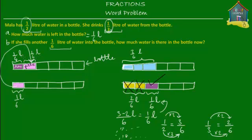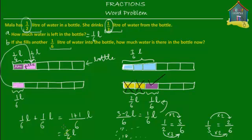She has one sixth of a liter plus one sixth of a liter. Since both fractions have a common denominator, it's straightforward to add them: one plus one gives two sixths of a liter. The amount of water in the bottle now is two sixths of a liter. But before calling it the final answer, we must check if we can simplify. Dividing both numerator and denominator by two gives one third — two divided by two is one, and six divided by two is three. So the simplified answer is one third of a liter.